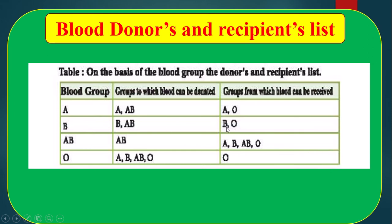Blood group B can receive from blood group B and O. Blood group AB can donate only to blood group AB, and can receive from blood group A, blood group B, blood group AB, and blood group O. On the other hand, blood group O can donate to blood group A, blood group B, blood group AB, and blood group O, and can receive from only O.